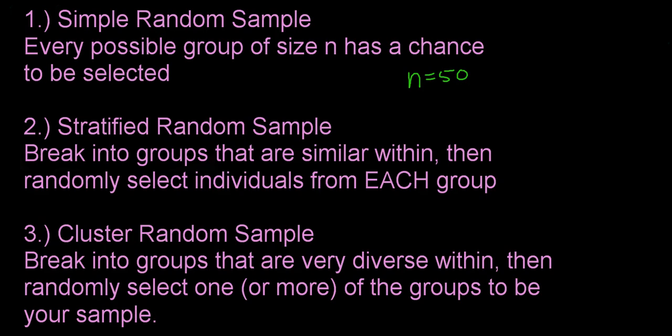The easiest way to do a simple random sample is to give everybody a number in the entire population. Maybe use a computer number generator to randomly pick out 50 numbers and those 50 people get picked. You can think of it like putting everybody's name on a piece of paper, putting it into a hat and picking out 50 names. That's how you do a simple random sample.